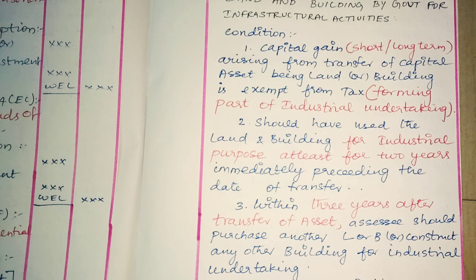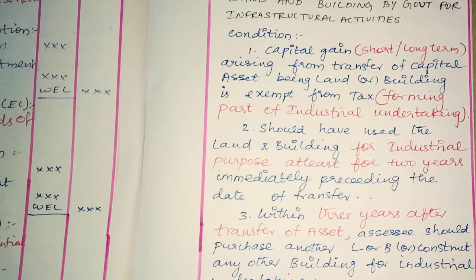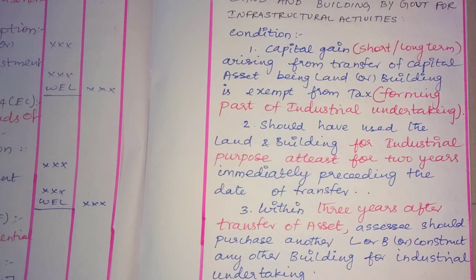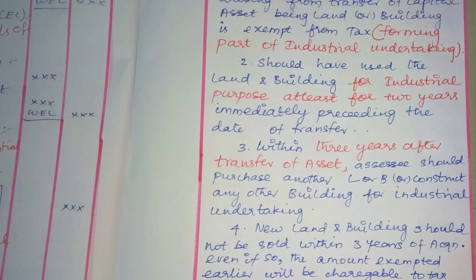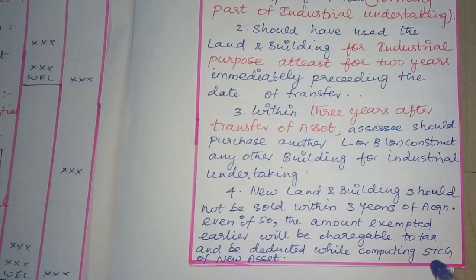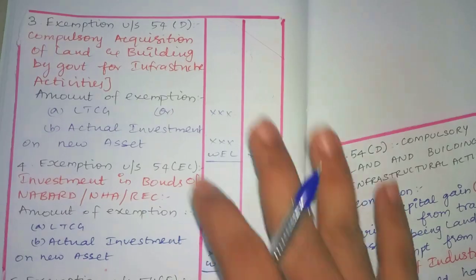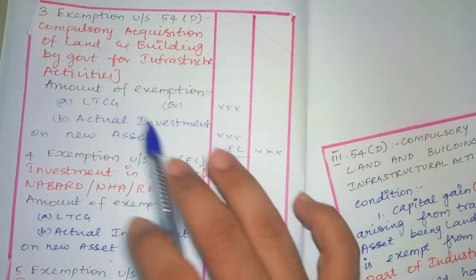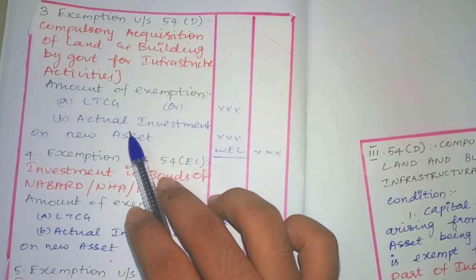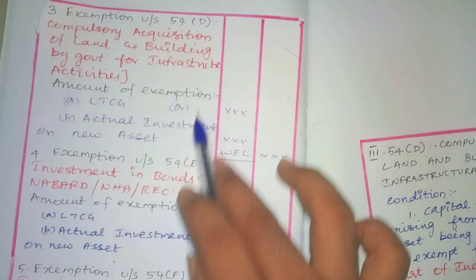The asset must have been used for the past 2 years before acquisition by the government. After reinvesting, you can get exemptions within 3 years. If you sell the new asset, the cost of acquisition will be reduced by the exemption already claimed. If there is any remaining taxable amount, tax will be charged. The exemption amount is: Long Term Capital Gain or Actual Investment in the New Asset, whichever is least.